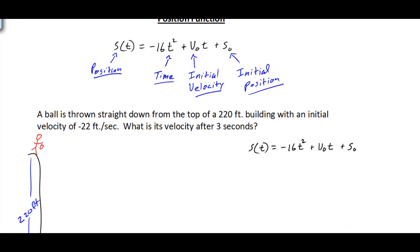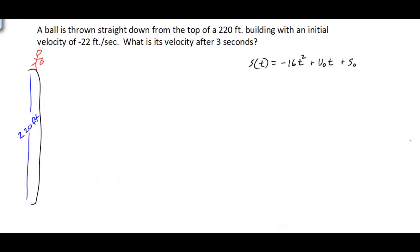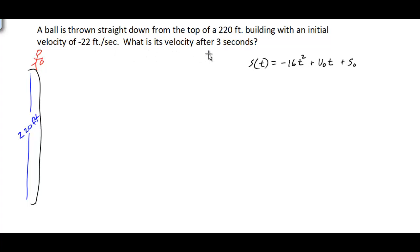Let's see if we can work through this example using our position function. The problem gives us a ball thrown straight down from the top of a 220-foot building with an initial velocity of negative 22 feet per second. The velocity is negative because the ball is thrown downward. We need to calculate the velocity after three seconds.